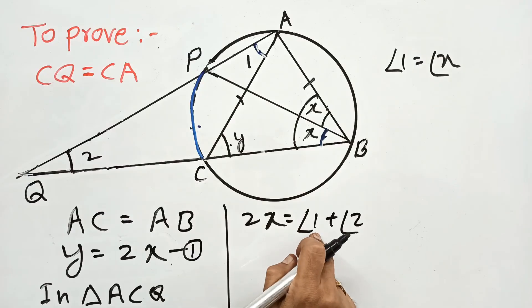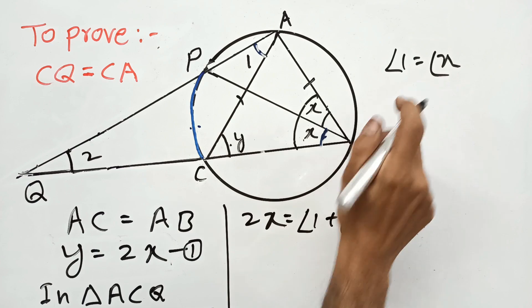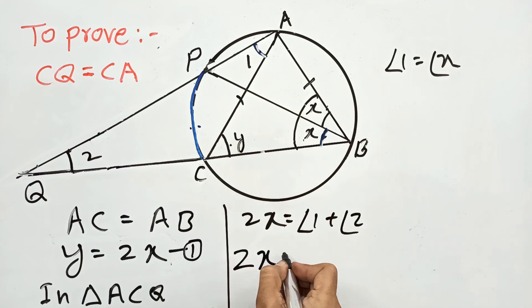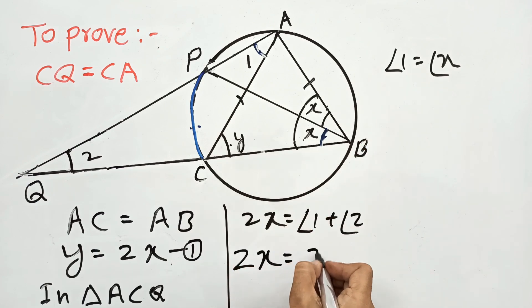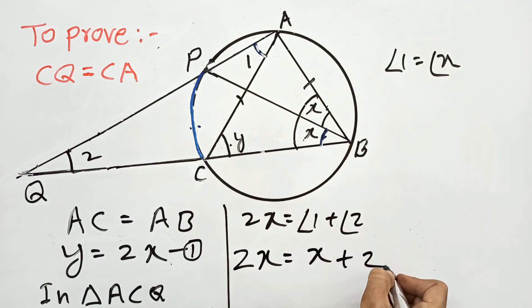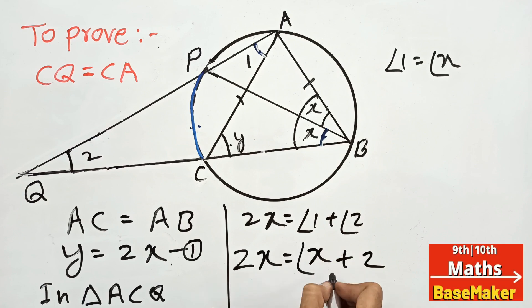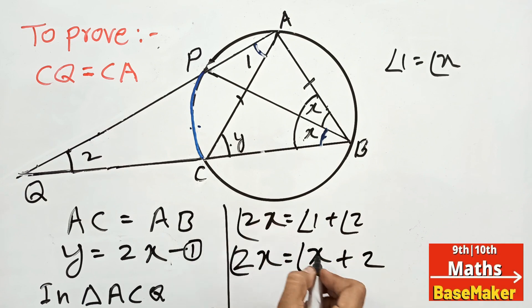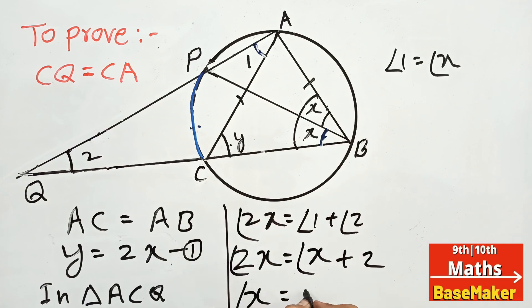Replacing angle 1 with X in our equation: 2X equals X plus angle 2. Subtracting X from both sides gives angle X equals angle 2.